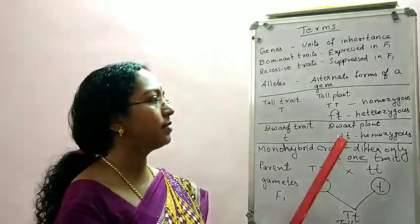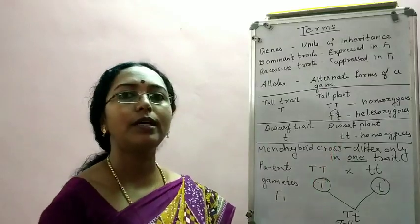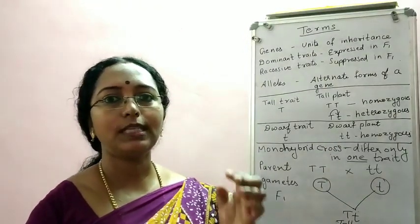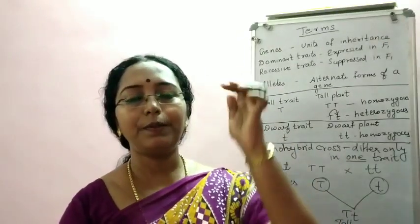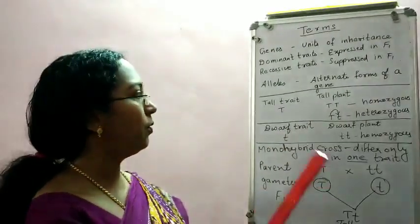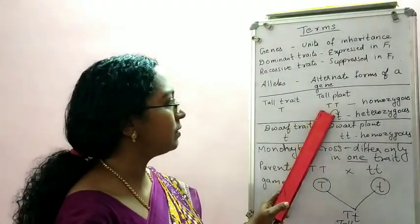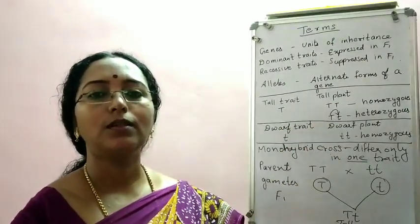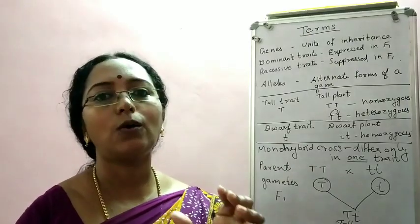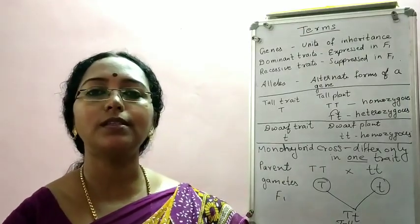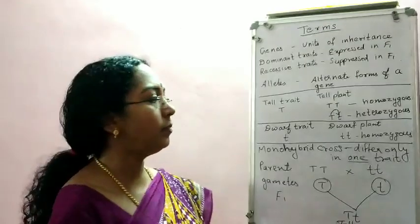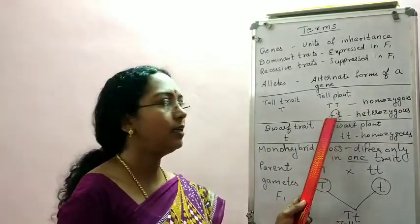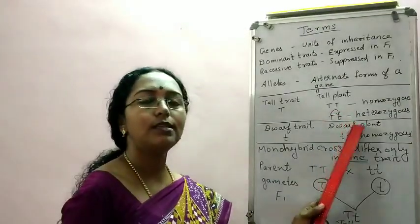But what if I write capital T and small t together? Capital T is dominating, so capital T will suppress the small t. So I will get only tall — that also represents a tall plant. So the dominant character can be expressed by either writing capital T, capital T, or capital T, small t.